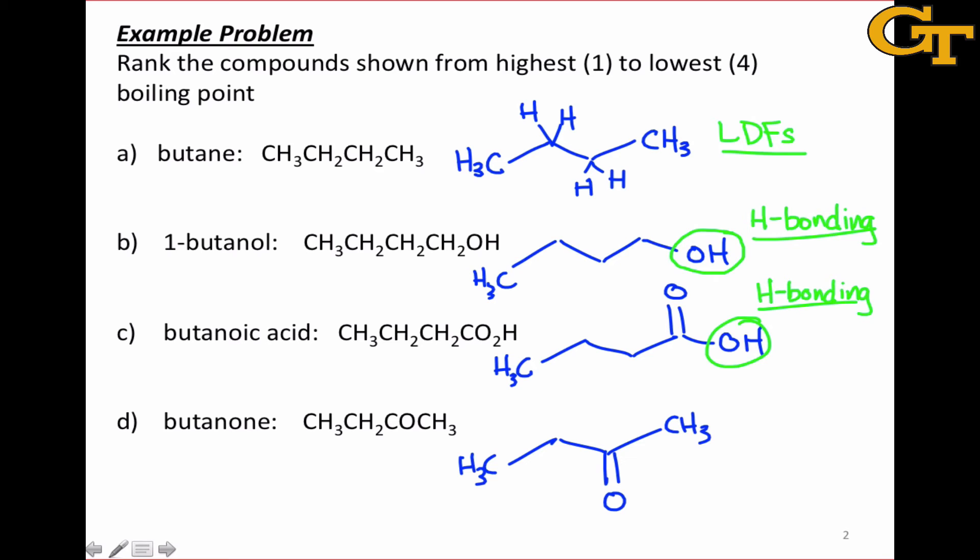Butanoic acid as well has a hydroxyl group and can also engage in hydrogen bonding. Although butanone contains a carbonyl group and contains a heteroatom, note that it cannot engage in hydrogen bonding because it doesn't have an oxygen connected to a hydrogen or an NH group or an FH group. So there's no H-bonding in butanone. However, it does have an overall dipole moment, pointing in this direction, and so it can engage in dipole-dipole forces. This is the strongest intermolecular force that we should expect for butanone. Now this leaves us with a bit of a conundrum, because we've seen that hydrogen bonding is the dominant intermolecular force in both 1-butanol and butanoic acid.